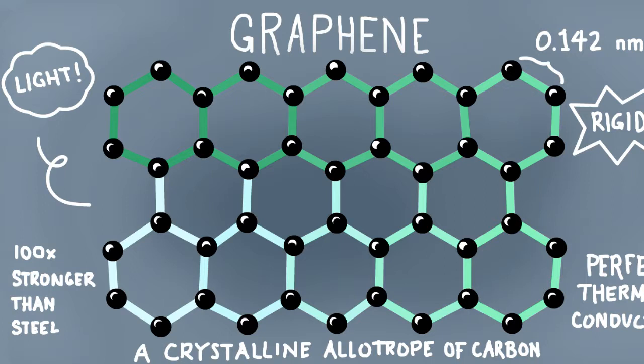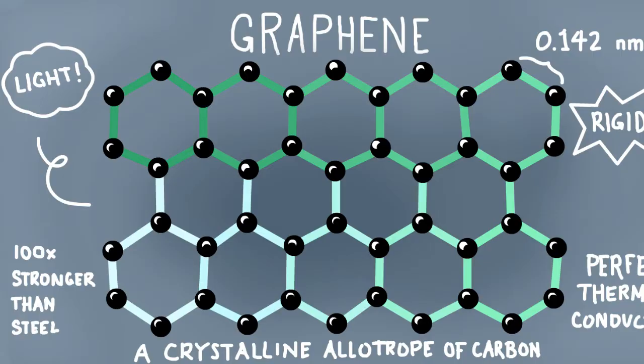Graphene is a wonder material. It's a carbon honeycomb just an atom thick, it's great at conducting electricity and heat, and it's strong and stable.